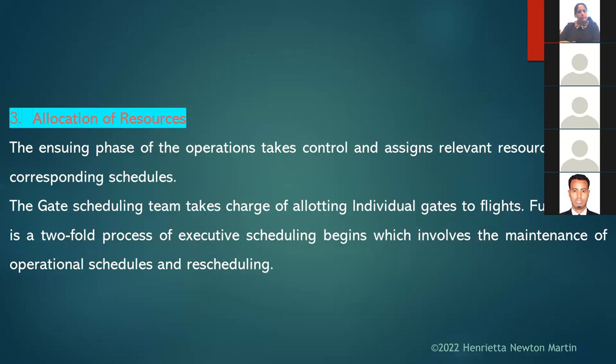The next phase is allocation of resources. Operations takes control and assigns relevant resources to corresponding schedules. The gate scheduling team allots individual gates to flights — for example, when you receive a boarding pass it will indicate which gate to proceed to, such as Gate 3 or Gate 53. This is a two-fold process of executive scheduling involving maintenance of operation schedules and rescheduling.